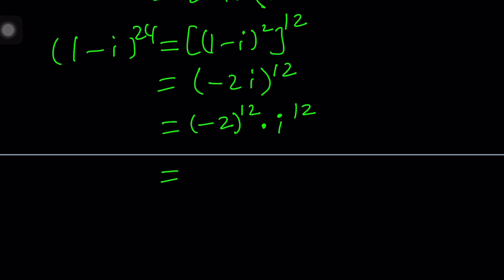When you multiply, it's going to be 2 to the 12th. i to the 12th is 1, by the way, because 12 is a multiple of 4. So this is going to be 2 to the power of 12, which is 4,096. That would actually be the answer, the final answer for that part.